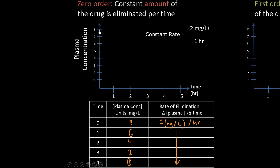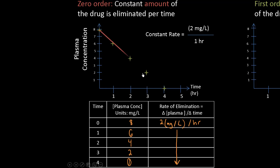Let's draw this on the graph. Starting at 8, after 1 hour I'm at 6, after another hour at 4, then at 2, and after 4 hours nearly all of the drug is out of the body. When I draw this graph, I get a linear graph — that is the hallmark of zero order elimination on a plasma concentration versus time plot.